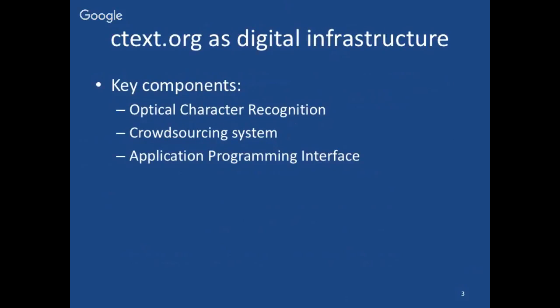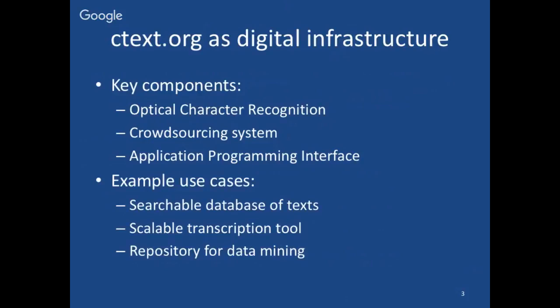Thinking of ctext.org in terms of digital infrastructure, there are three main important components which work together to make it something which can be repurposed for other projects. These are: firstly, optical character recognition designed specifically for these types of texts; secondly, an integrated crowdsourcing system; and lastly, a public open application programming interface. These three things together can be used for a variety of use cases — as a searchable database of full-text information, as a scalable transcription tool, a repository for data mining, and more.